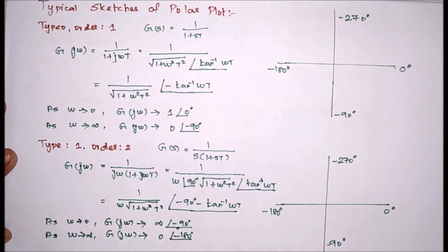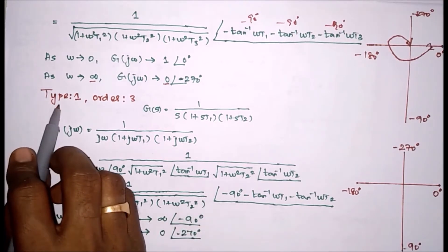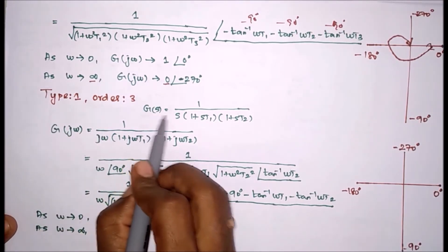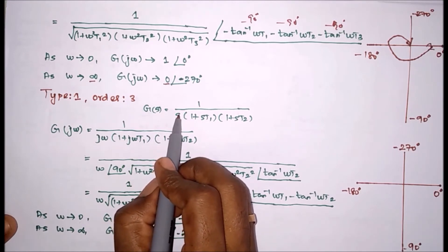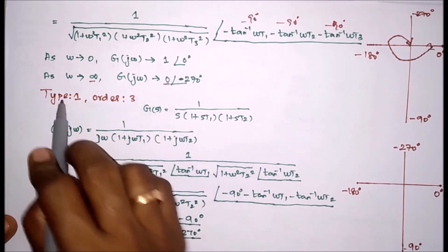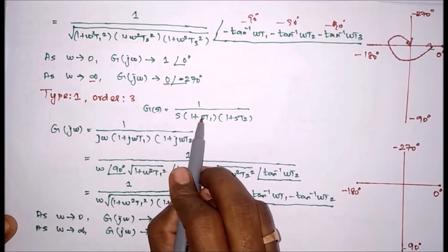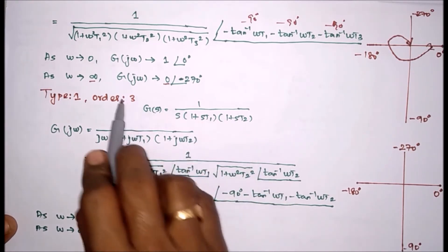In this video we are going to see about the drawing of polar plot. The next one is a Type 1 Order 3 system. There is only one pole on the origin, therefore this is a Type 1 system. The order is S into S into S, which is S power 3, therefore its order is 3.